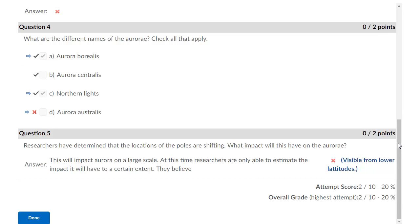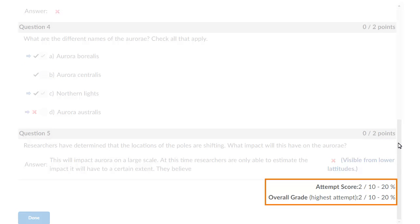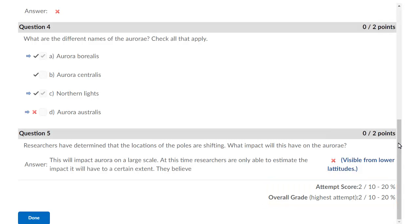If you make multiple attempts at a quiz, your attempt score and overall grade may be different to reflect the scoring method your instructor chooses. For example, the overall grade can reflect the average number of attempts or the highest score achieved.